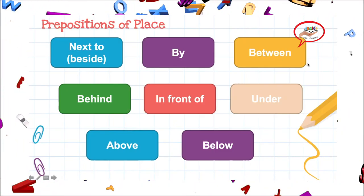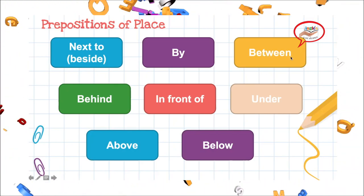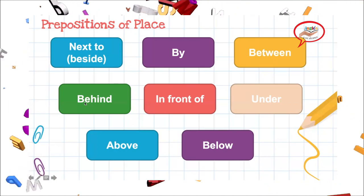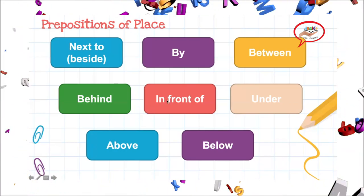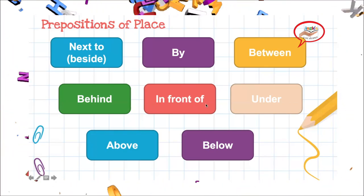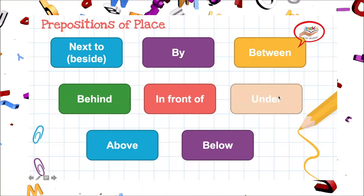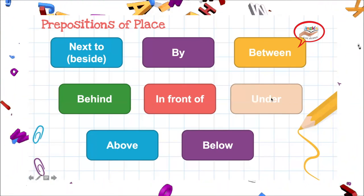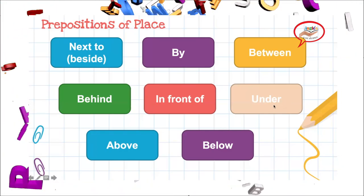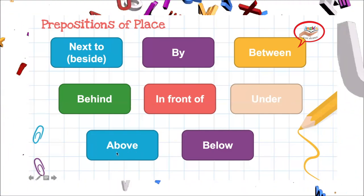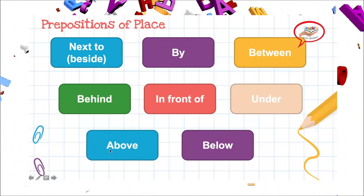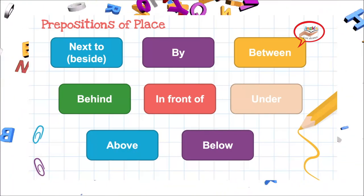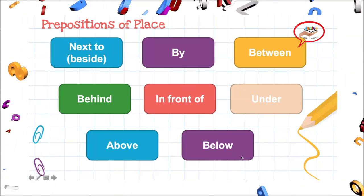Ahora tenemos 'between'. Between. Behind. In front of. 'Under' — como ven, no es 'under' con sonido diferente, es 'under'. Under. 'Above' — no es 'above' con otro sonido, es 'above'. Above. Y por último tenemos 'below'. Below.